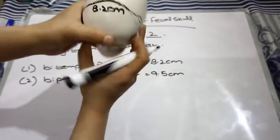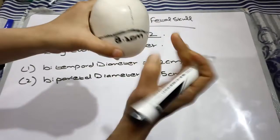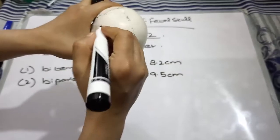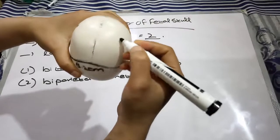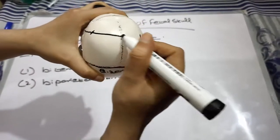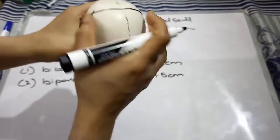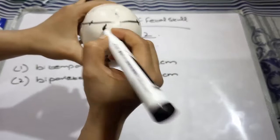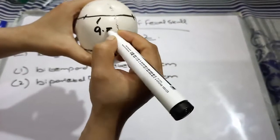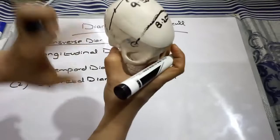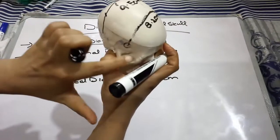The next diameter lies between the parietal bones. These are our parietal bones and this is our parietal eminence. The diameter between the parietal bones is known as the bi-parietal diameter, and this is 9.5 centimeters. So the two transverse diameters of the fetal skull are the bi-temporal and bi-parietal.